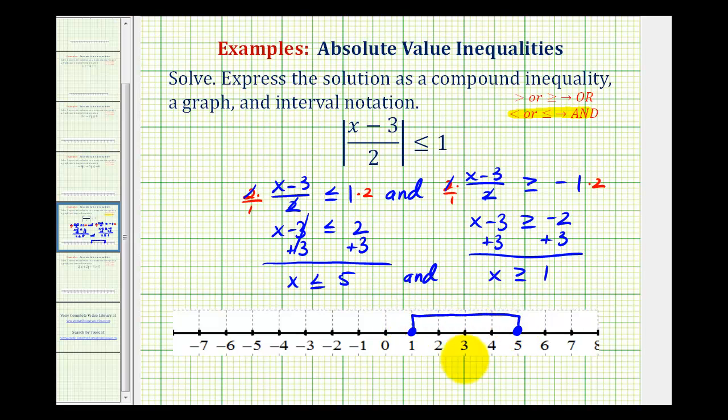And then to express this using interval notation, we have the interval from one to five. This is a closed interval, meaning it includes the endpoints, so we use square brackets. We'll take a look at one more example in the next video.